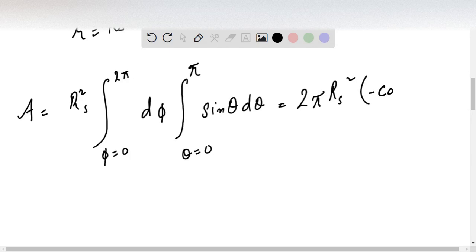This is equal to 2 pi Rs square times minus cos theta from 0 to pi, and the answer is